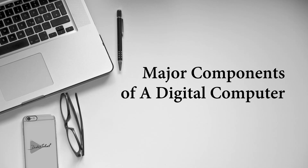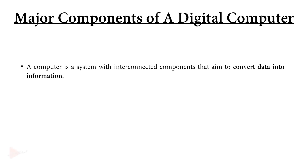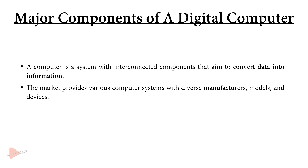Welcome. In this video we are going to talk about the major components of our digital computer. A computer can be perceived as a system comprised of multiple interconnected components that collaborate with the objective of transforming data into information. The market offers numerous computer systems featuring a diverse range of manufacturers, models, and additional devices.